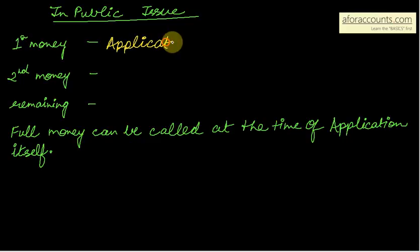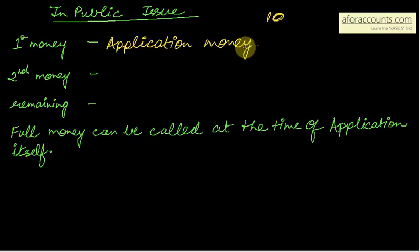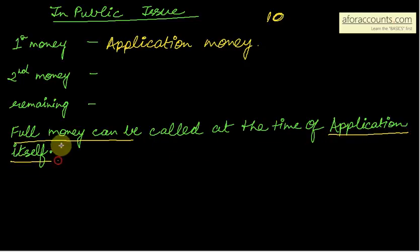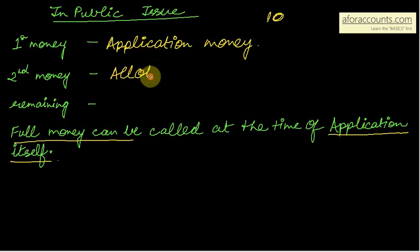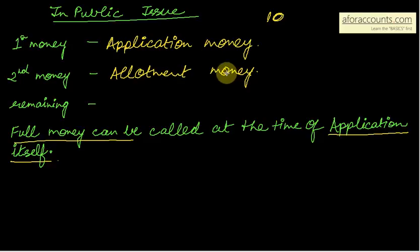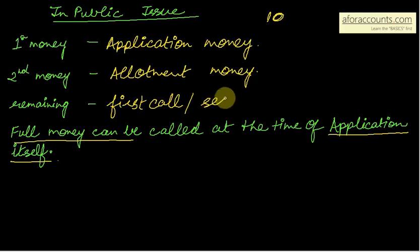Say the company's share is 10 rupees. Application money can be a portion of that, or the full money can be called at the time of application itself — either call all 10 rupees at application, or call a portion at application. The second money is allotment money. Then there can be first call, second call, or even a final call — sometimes a third call also.